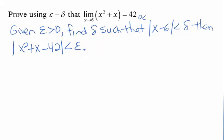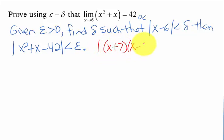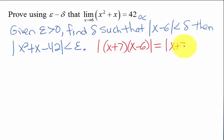Let's see what we need for a requirement on delta given any epsilon. This stuff inside the absolute values will factor, so we have the absolute value of x plus 7 times x minus 6. By the property of absolute values, the absolute value of a product equals the absolute value of each of the factors multiplied together.